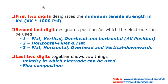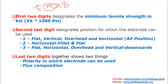Let's take the example of E7018. E stands for electrode. The first two digits, 70, represent the minimum tensile strength — 70 KSI, which is kilo pounds per square inch, or 70,000 PSI. What is the full form of PSI? That is a question for you.